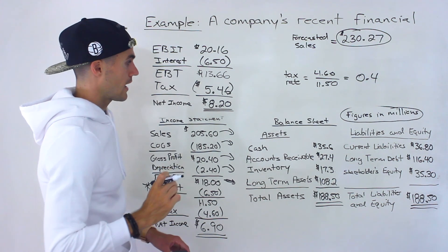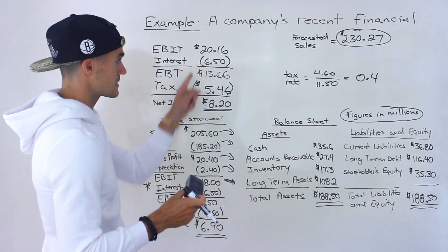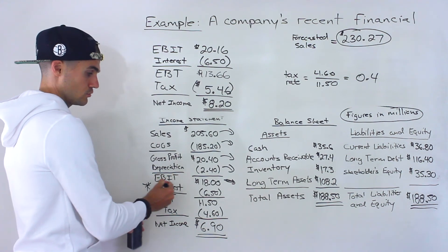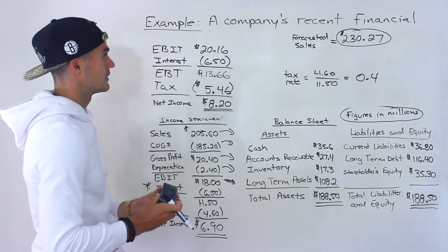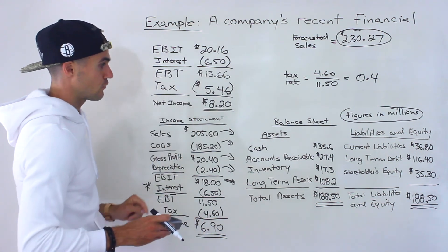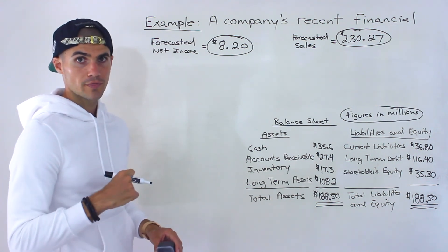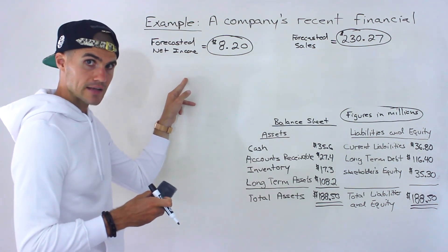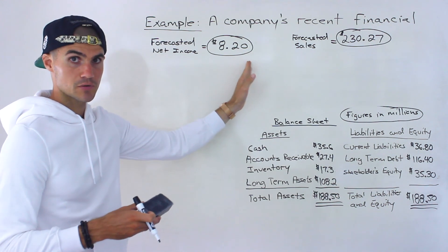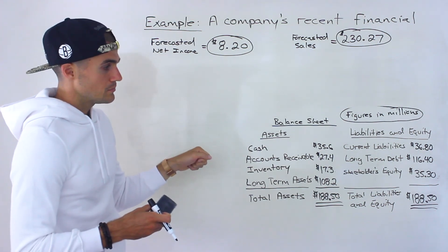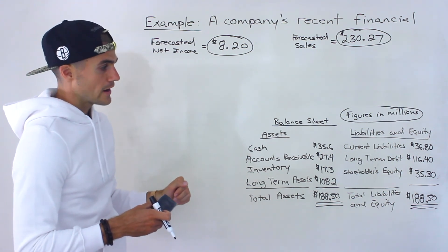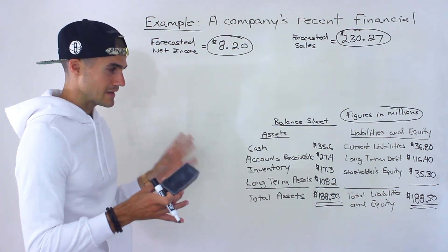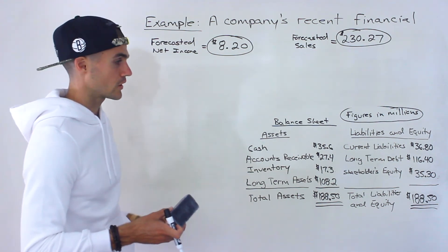So the answer to Part A is a forecasted net income of $8.20 million. It required more work because the interest was staying constant — we could only grow up to EBIT at 12%, then had to do everything else manually. Moving on to Part B, if the payout ratio is 60%, then 60% of net income is paid as dividends and 40% is retained. The process from here is the same as the previous example.